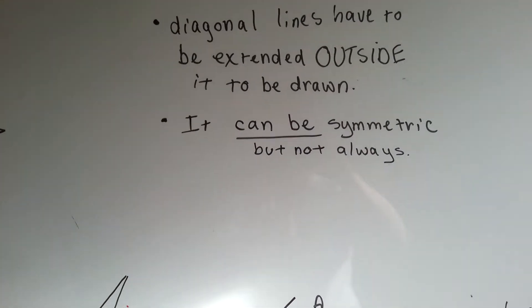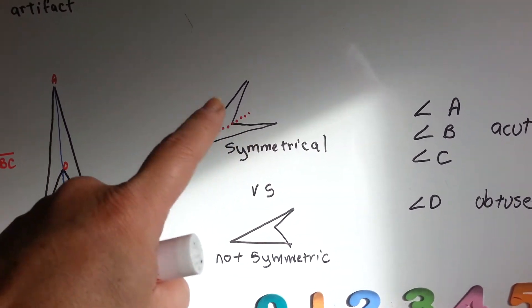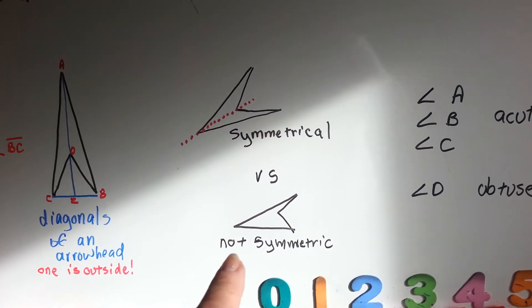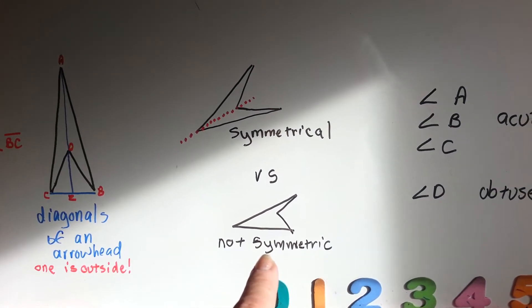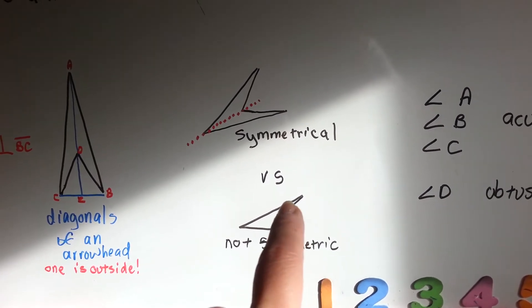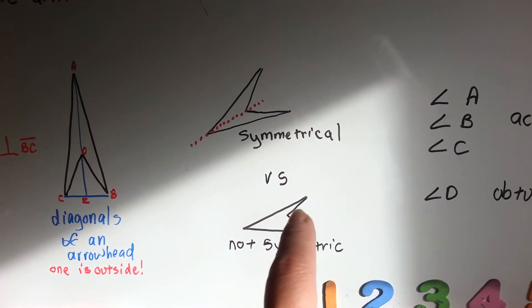It can be symmetric, but not always. So it could be symmetric and fold over itself like a reflexive property, but it could not be symmetric maybe sometimes, depending on how this obtuse angle is right here, this concave part of it.